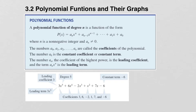The numbers a_sub_n are called coefficients. The number a_sub_0, also called a-naught, is the constant coefficient or constant term of the polynomial. The number a_n, the very first one, is the coefficient of the highest power, also called the leading coefficient. And a_n times x to the n is the leading term.